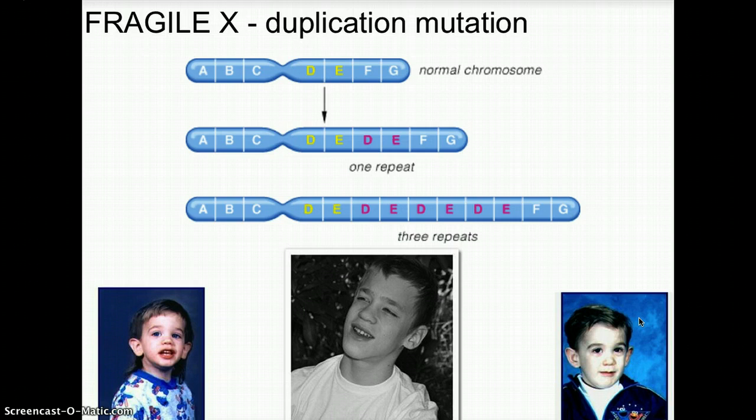These are some of the chromosomal abnormalities discussed in the last part of Chapter 10. It's important to know these before diving into Mendelian genetics and inheritance patterns. Have a great day.